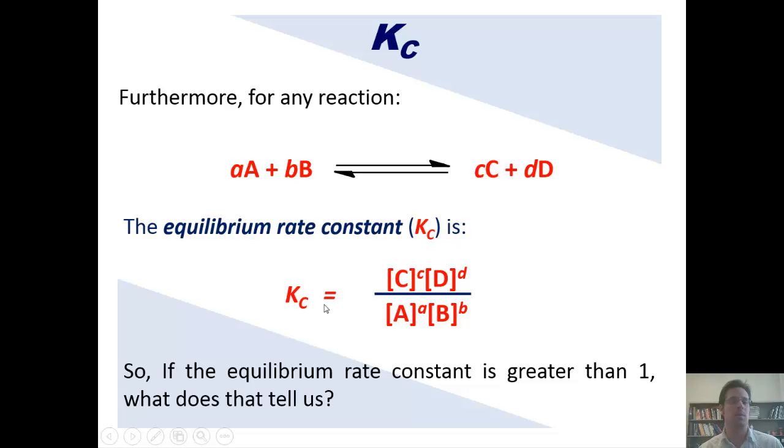Now what if Kc, the equilibrium constant, were much lower than one? What could we say then? Well, we could say that at equilibrium, the concentration or amounts of reactants in that case would be much larger than products. Now, what if Kc was equal to one or close to one? What could we say then? Well, in that case, we could say that at equilibrium, the relative concentrations of products to reactants are about equal.